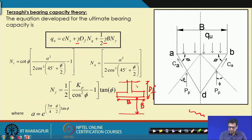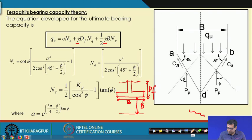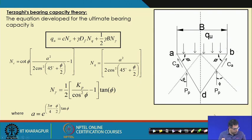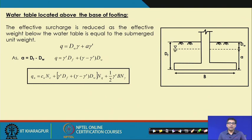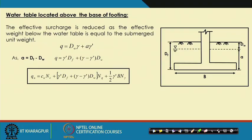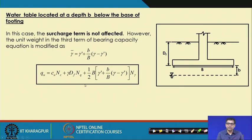The first gamma term in Terzaghi's equation corresponds to the soil above the base of the foundation, and the second gamma term corresponds to the soil below the base. N_c, N_q, and N_gamma are the bearing capacity factors, which can be determined using equations or from a chart. We also discussed the shape effect and the water table effect. If the water table is above the base of the foundation, one expression is used; if it is below the base, a different expression applies.